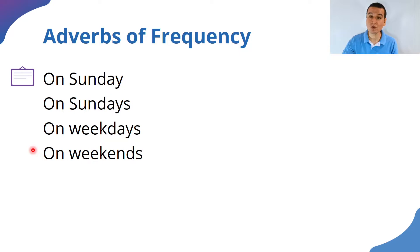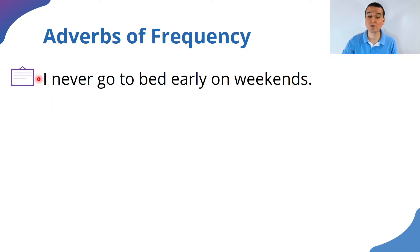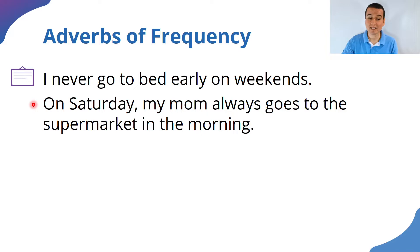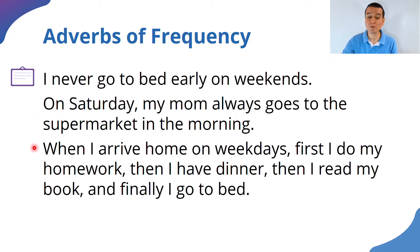Let me give you some examples. 'I never go to bed early on weekends' — 'never' means that never happens. 'On Saturday, my mom always goes to the supermarket in the morning' — 'always' indicates that happens all the time. 'When I arrive home on weekdays, first I do my homework, then I have dinner, then I read my book, and finally I go to bed.'